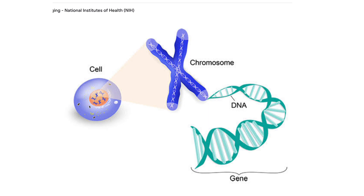This is the conclusion: inside the cell there is a nucleus; inside the nucleus there are chromosomes; inside the chromosomes are units called genes; inside the genes are DNA molecules; and inside the DNA molecules there are three units. Thanks for watching — see you in the next video, bye-bye.